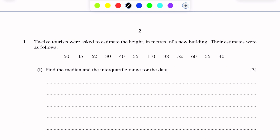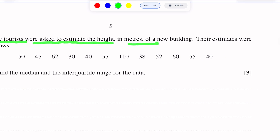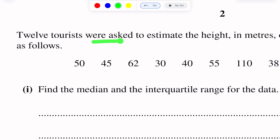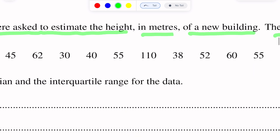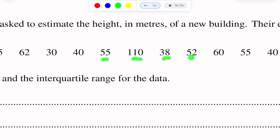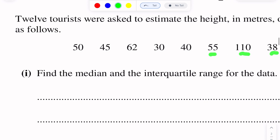The first question of this paper is on representation of data. 12 tourists were asked to estimate the height in meters of a new building. Their estimates were as follows: 50, 45, 62, 30, 40, and so on. These are the heights in meters of the new building as estimated by the 12 tourists.